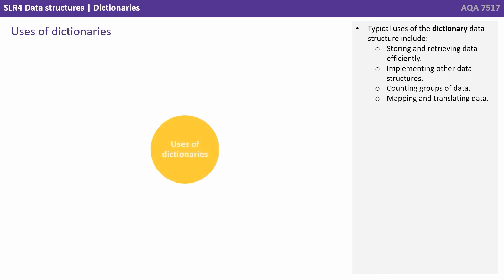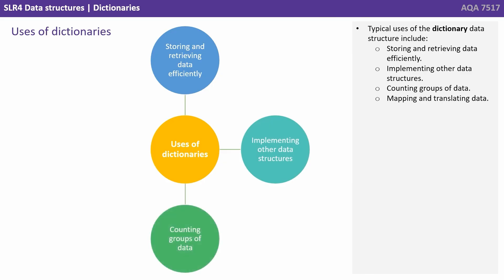Other typical uses of dictionaries include storing and retrieving data efficiently, implementing other data structures, counting groups of data, and mapping and translating data.